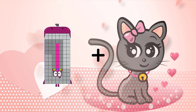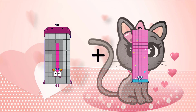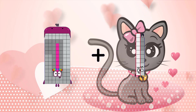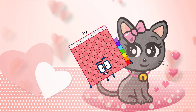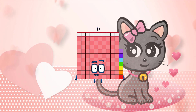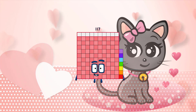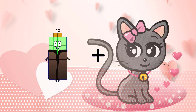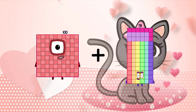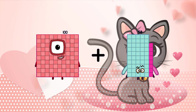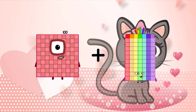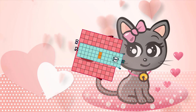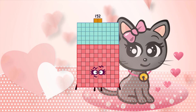98 plus 19 equals 117. 100 plus 52 equals 152.